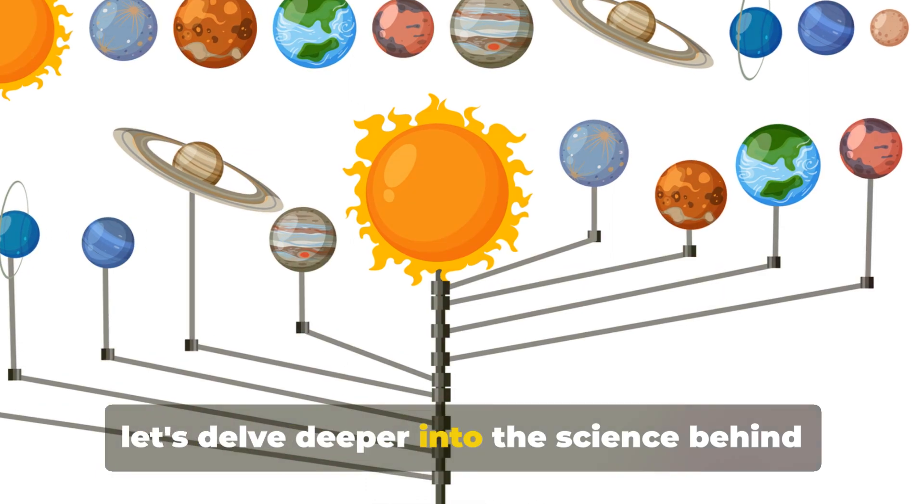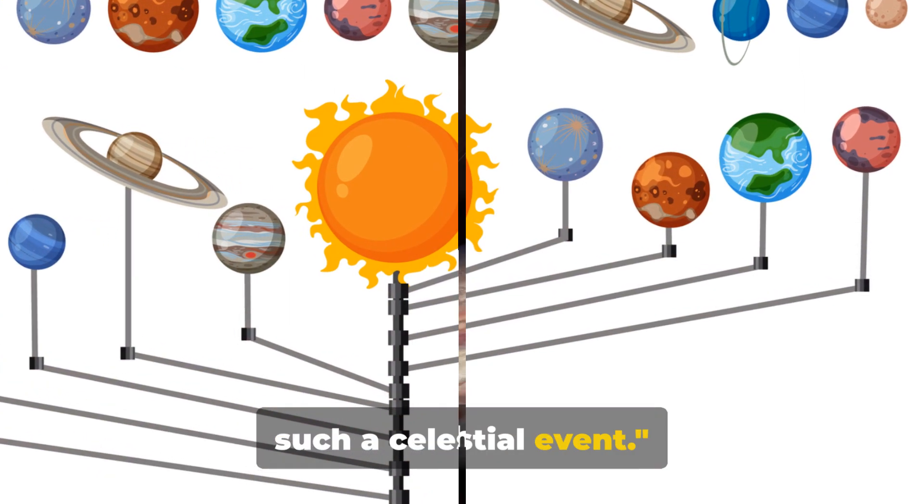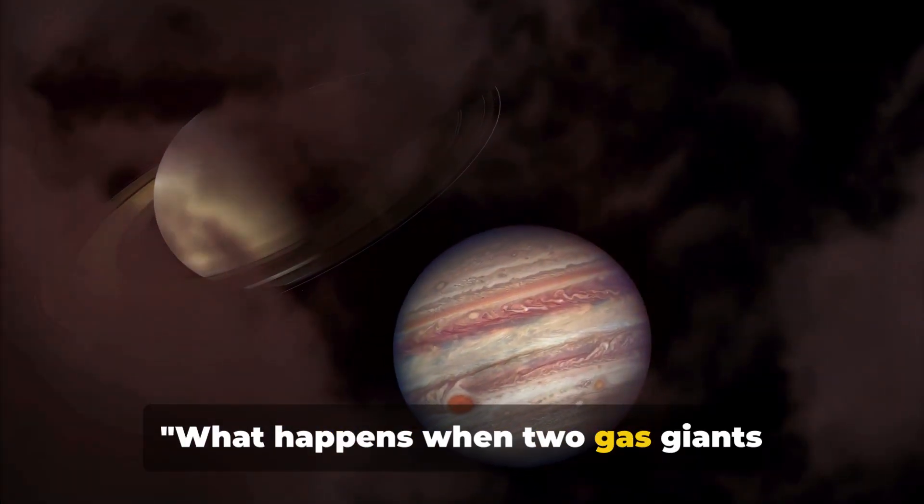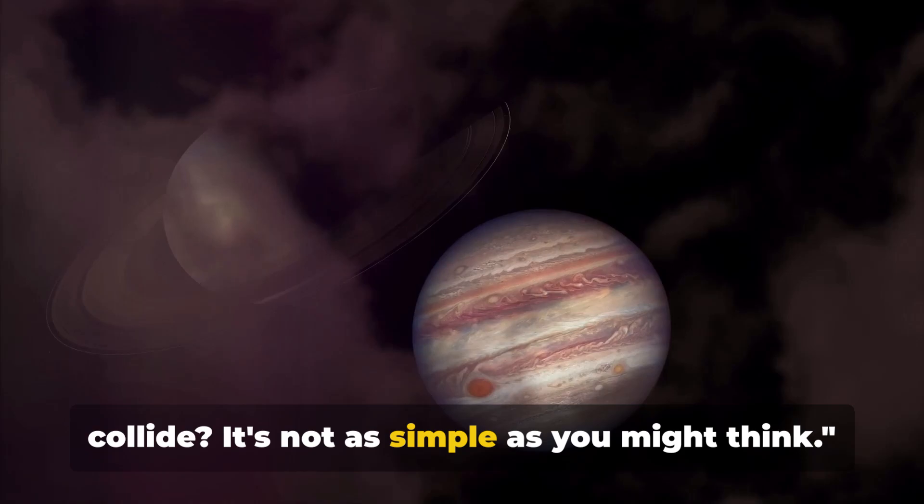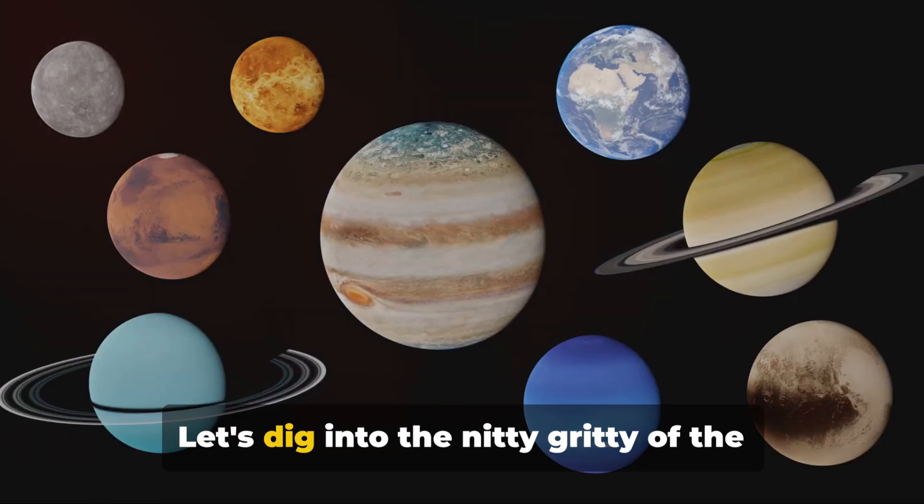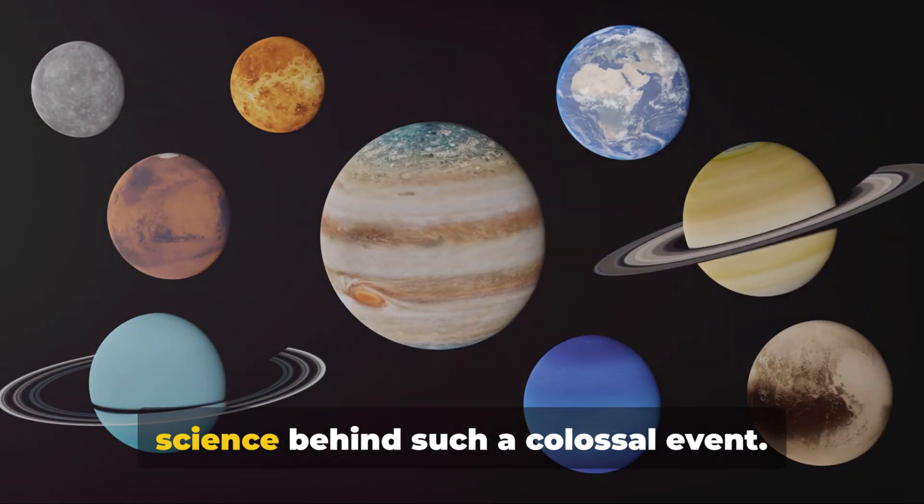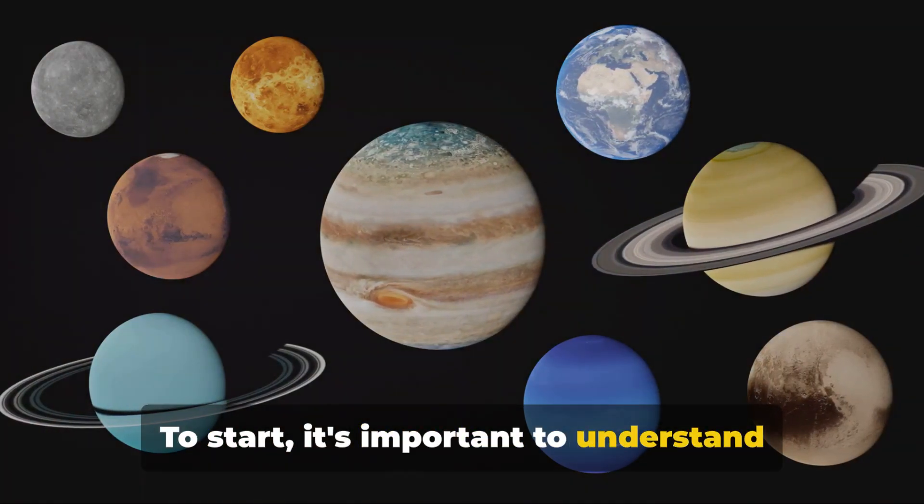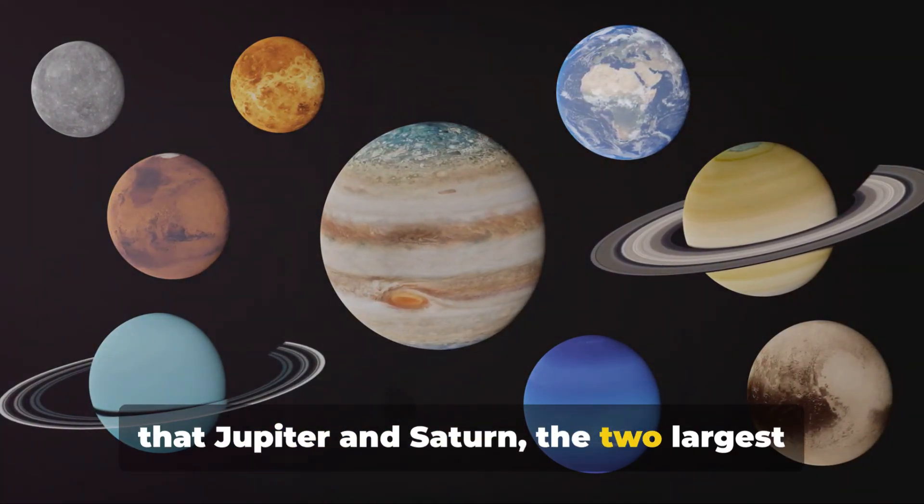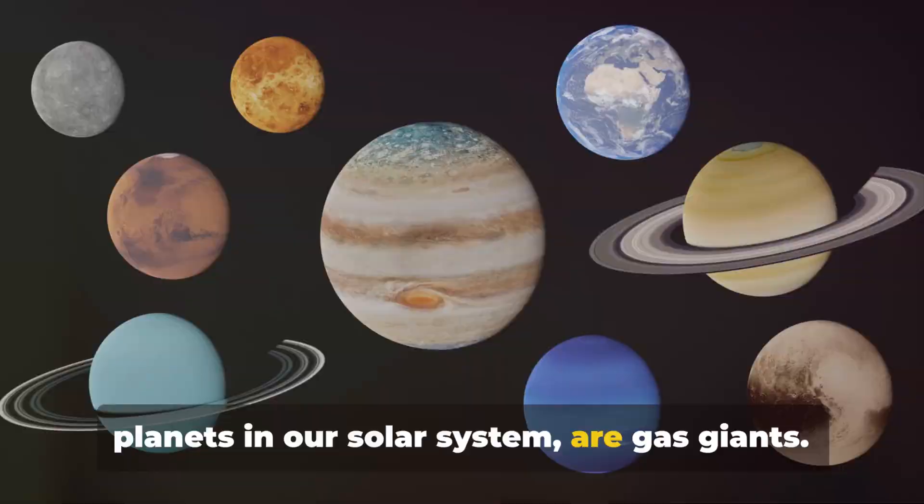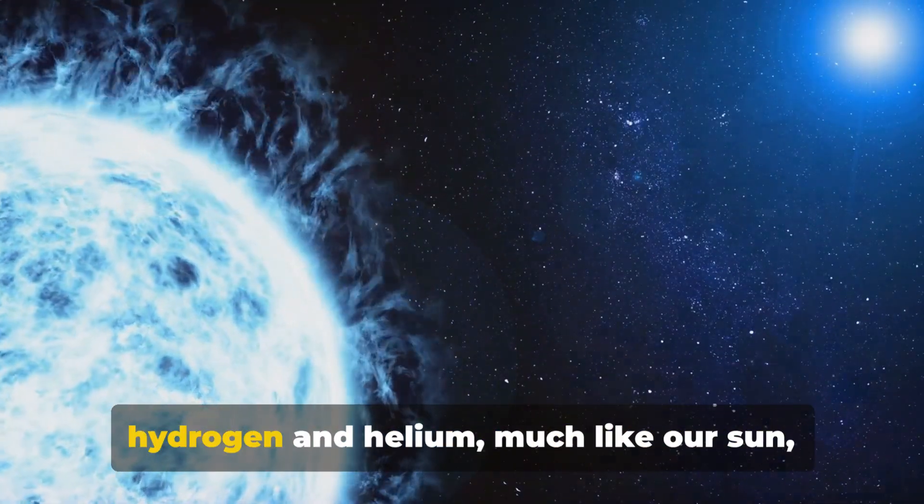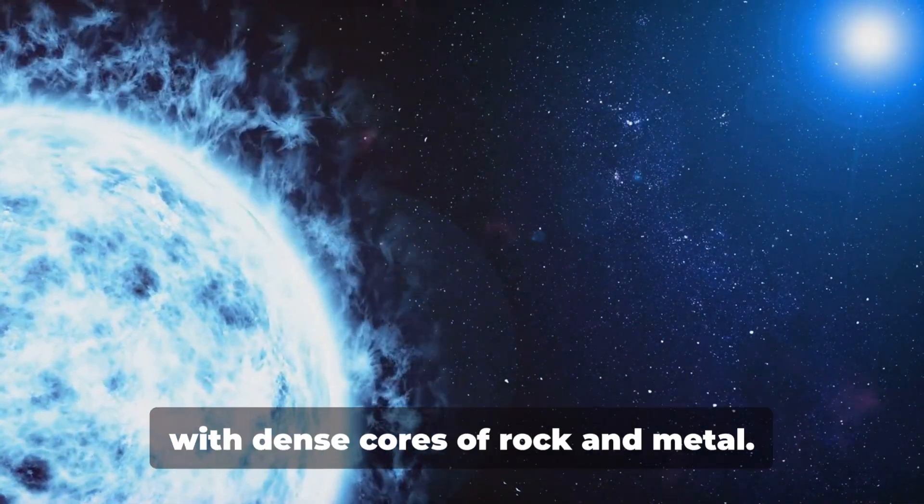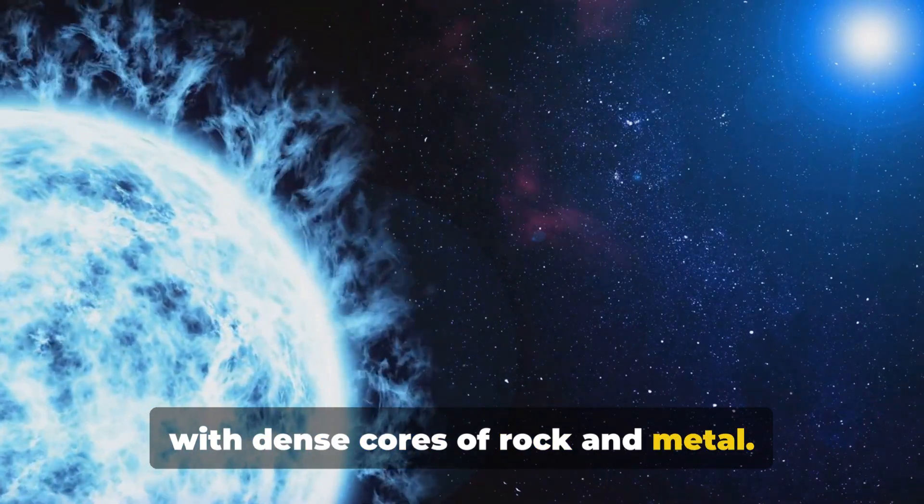Now let's delve deeper into the science behind such a celestial event. What happens when two gas giants collide? It's not as simple as you might think. To start, it's important to understand that Jupiter and Saturn are gas giants. This means they are primarily composed of hydrogen and helium, much like our sun, with dense cores of rock and metal.